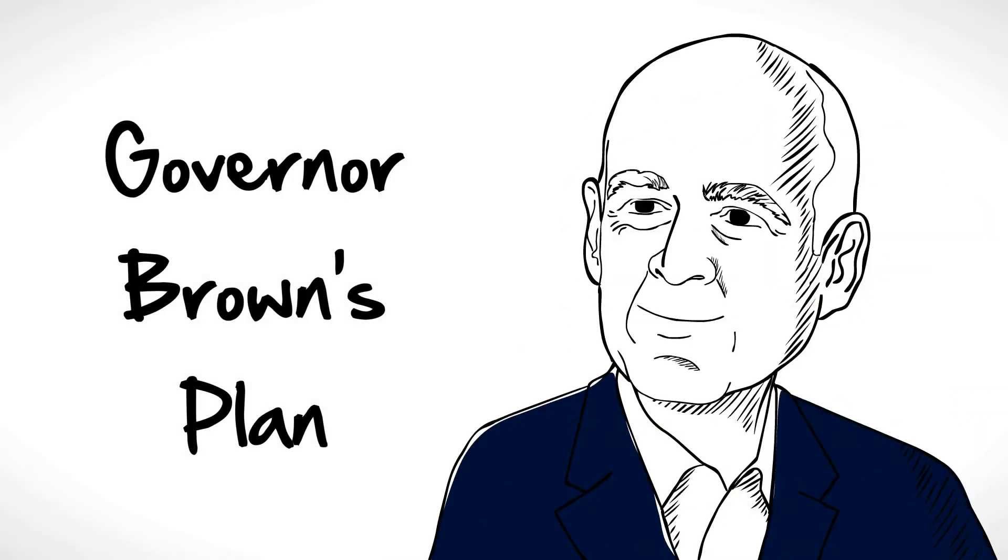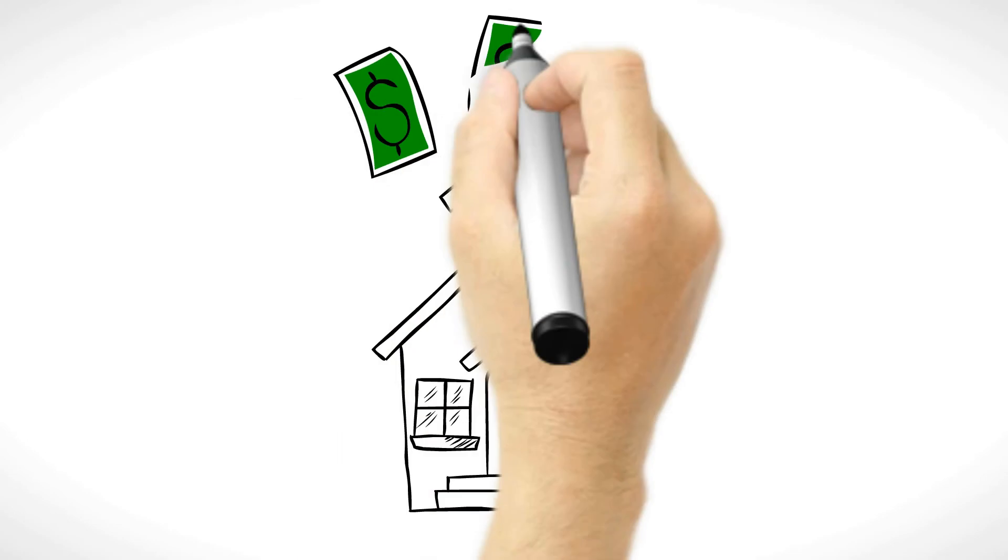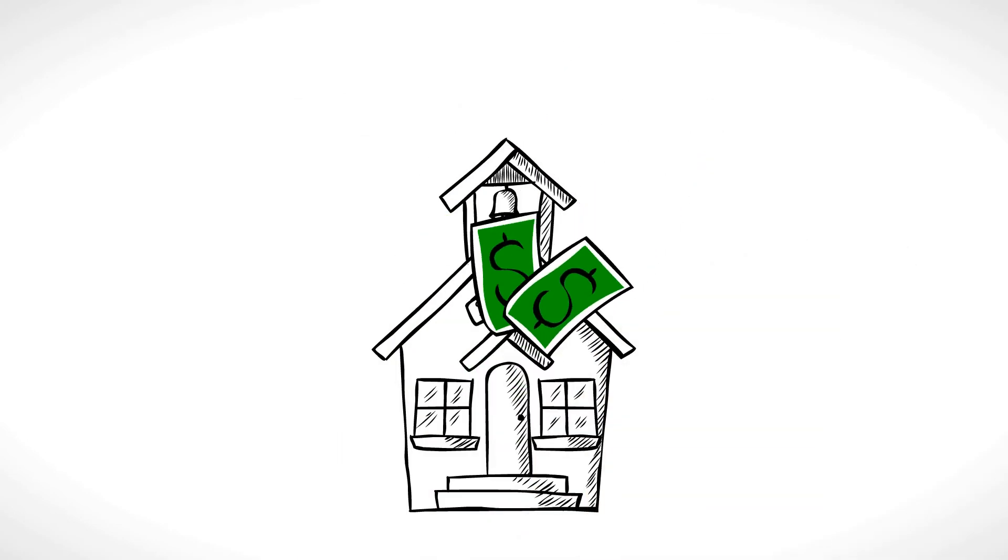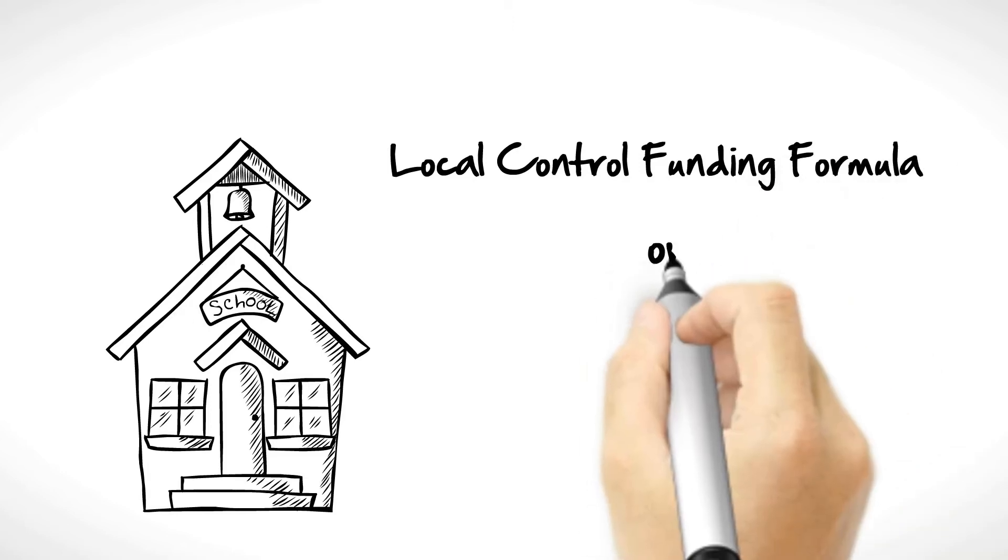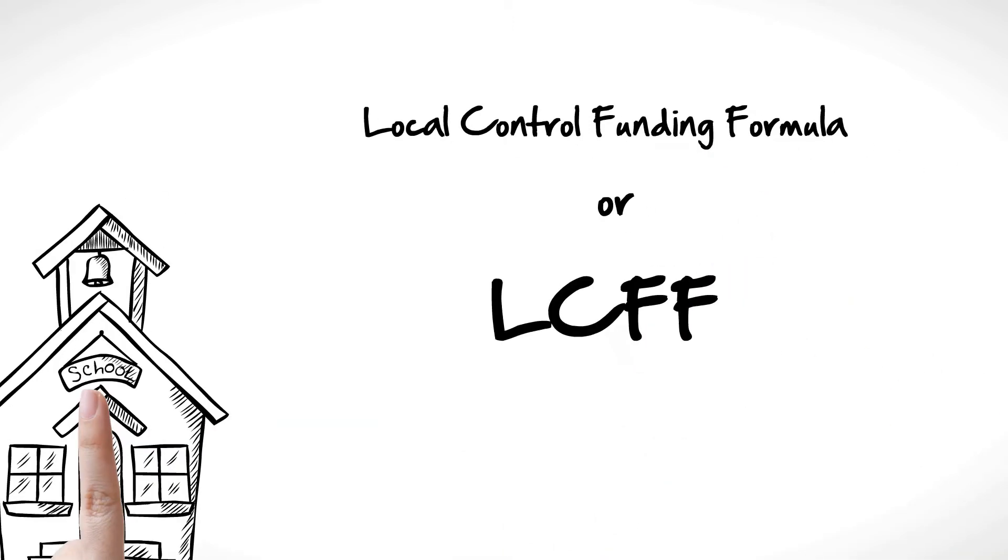The governor has a plan to fix these funding problems. He wants to improve the way we fund schools. The plan is called Local Control Funding Formula, or LCFF. The plan does the following.